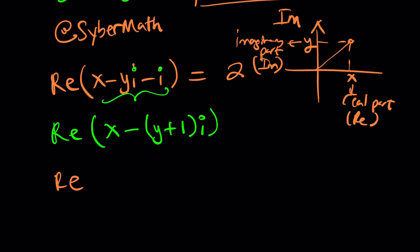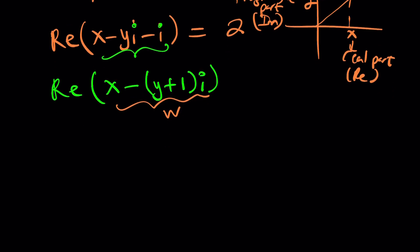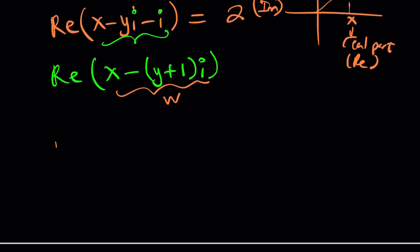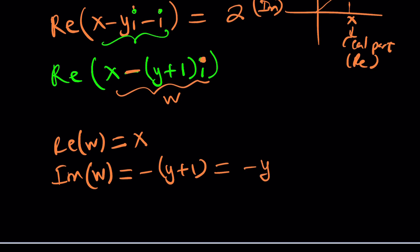So the real part of this number is, if you call this w, because z is a different number now, the real part of w is just going to be x, because that's the part that is not multiplied by i, and the imaginary part of w is going to be the opposite of y plus 1. You have to be careful. You have to take the minus sign, but do not include the i. That is the critical part, because both the real part and the imaginary part are real numbers, which is kind of weird. But that's what it is. So you can also write this as negative y minus 1, by the way.